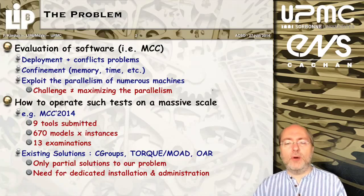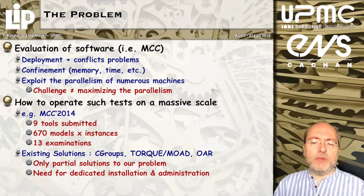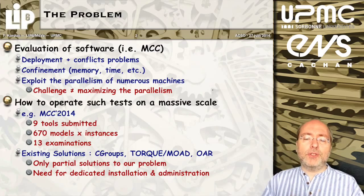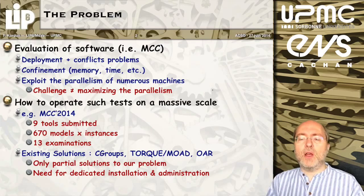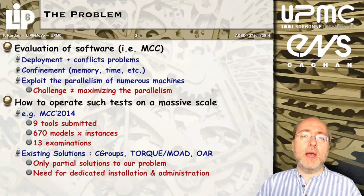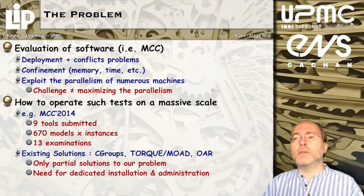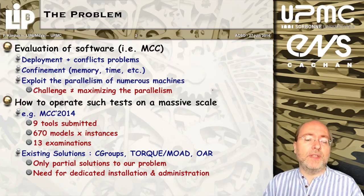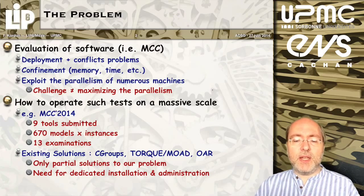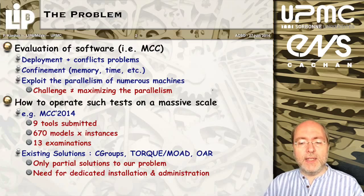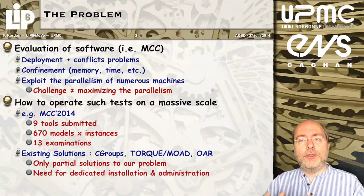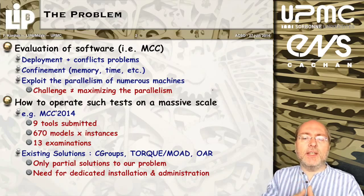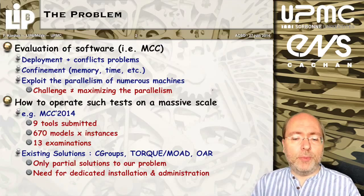What is the problem? The general problem is the evaluation of software, where you must install software and usually confine it within an amount of memory and time. Since you may have massively parallel machines and multi-core machines, you can want to exploit the parallelism of these machines. The challenge is not to increase the parallelism, but to exploit existing parallelism. There is no challenge in application terms, since the idea is to run concurrently several tests that will not interoperate between them.